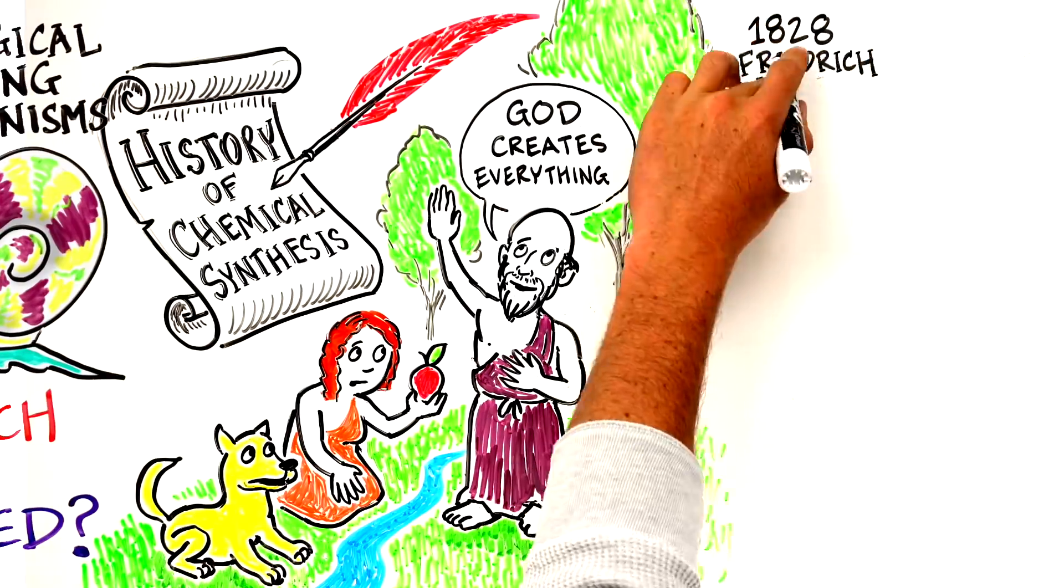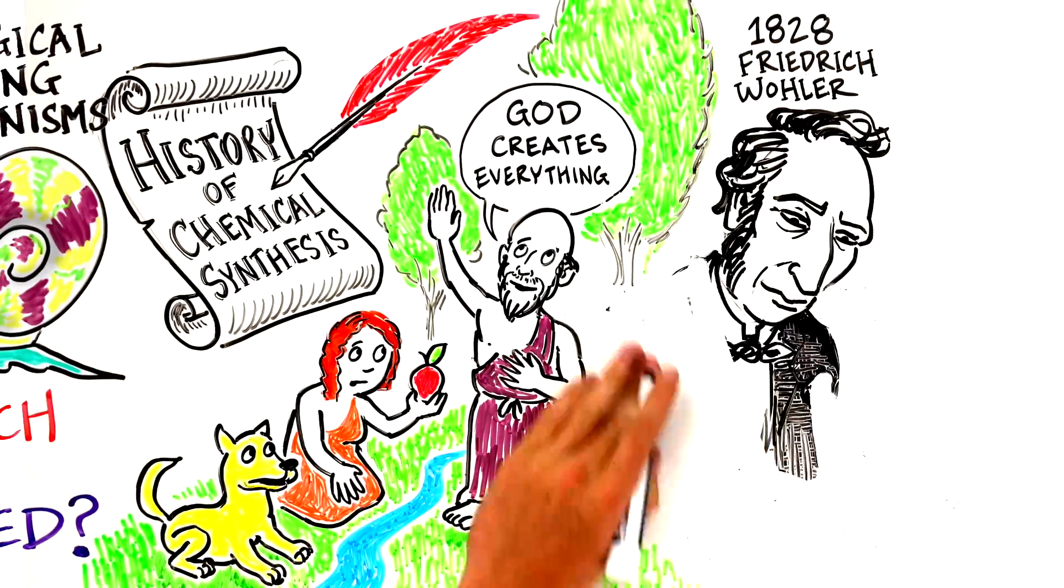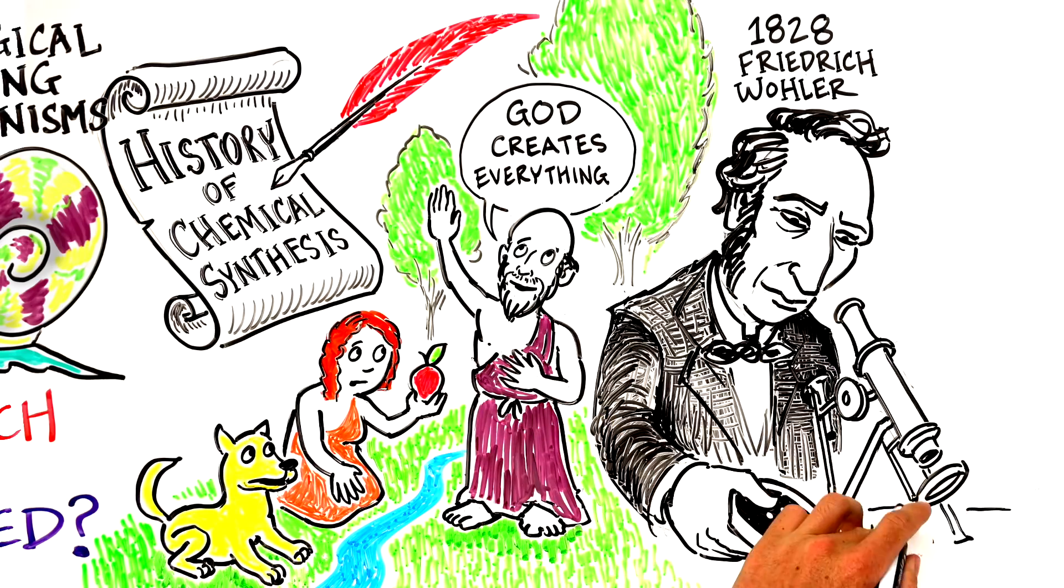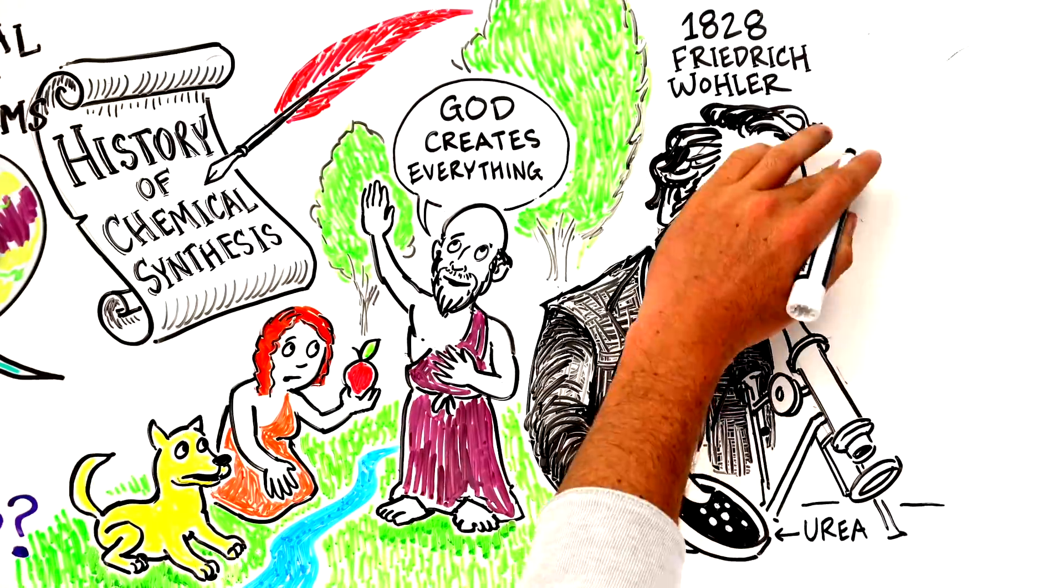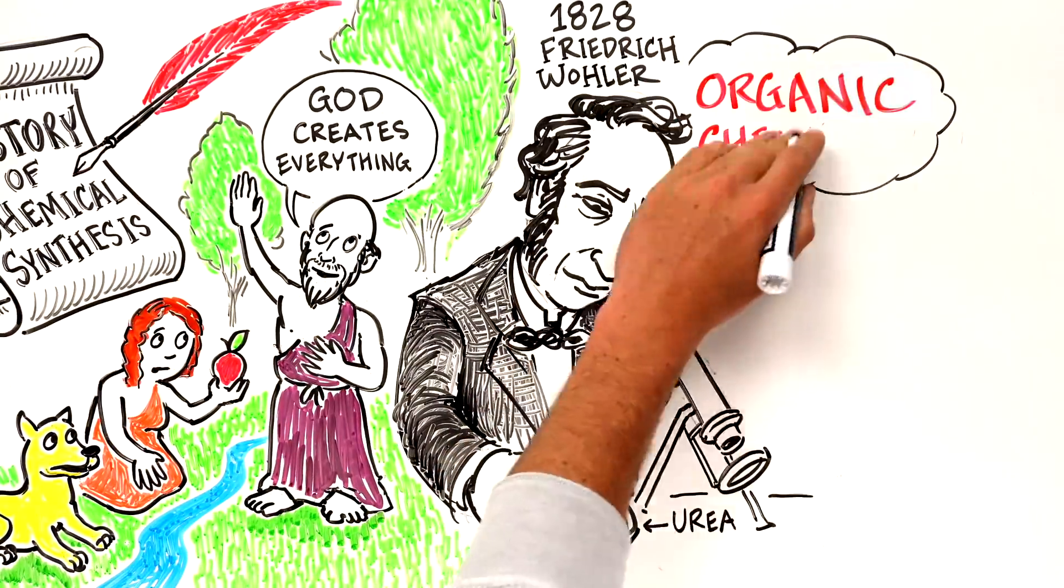But in 1828, Friedrich Wohler proved that this is not the case by synthesizing urea, a compound found in the human body. On that day, organic chemistry was born.